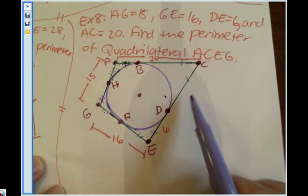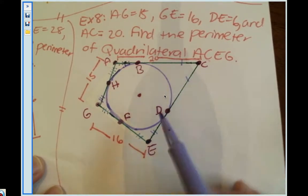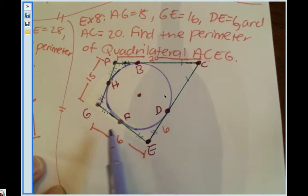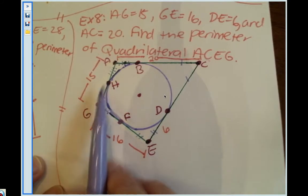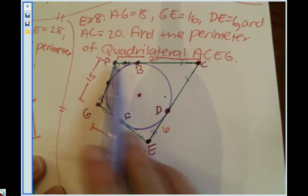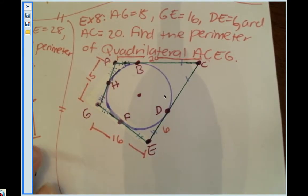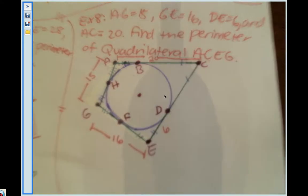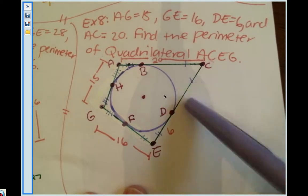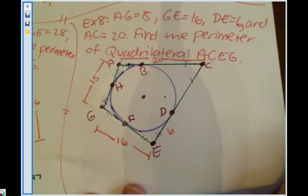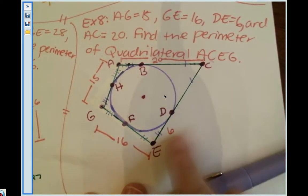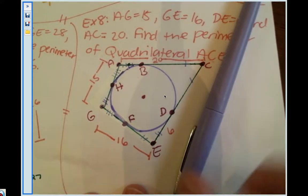BC is congruent to DC, DE is congruent to FE, GF is congruent to GH, and AH is congruent to AB. We're really close to finding the perimeter except we're missing this piece. We have everything else. I do know that this is six, so maybe I can use this to help me.